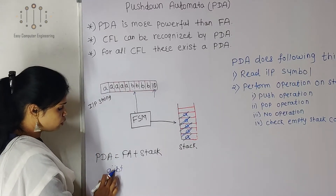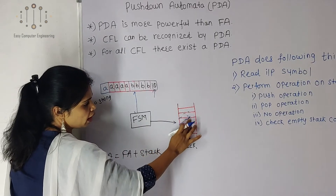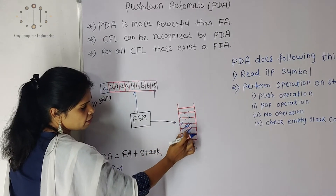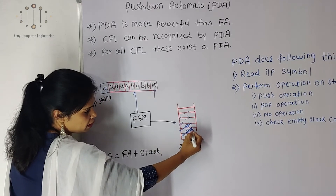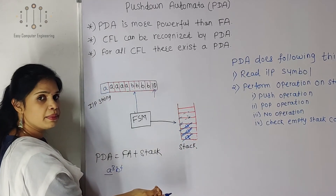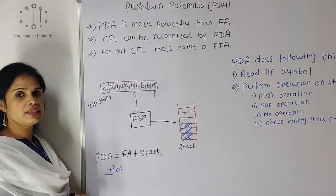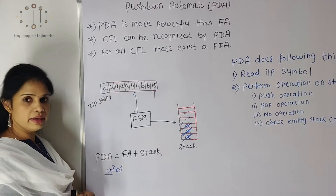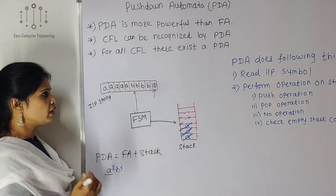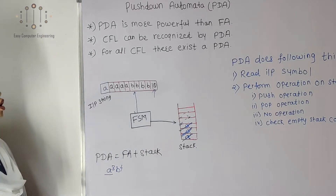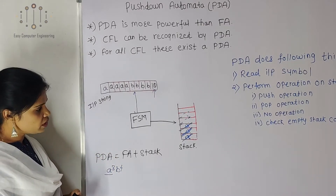Similarly, for the string A³ B⁴: we push 3 A's into the stack. For B1, B2, B3 we pop all three A's, but B4 still remains — the stack is already empty before the input ends. So the string A³ B⁴ is rejected by the pushdown automata. In this way we can represent context-free languages with the help of pushdown automata.